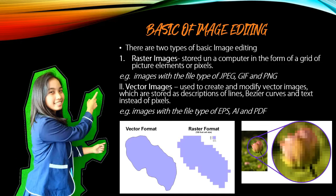2. Vector images: used to create and modify vector images, which are stored as descriptions of lines, bezier curves, and text instead of pixels. Images with a file type of EPS, AI, and PDF.